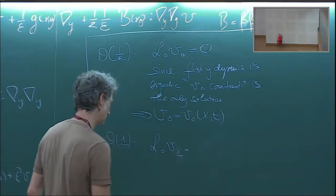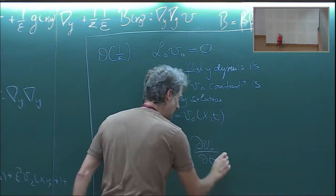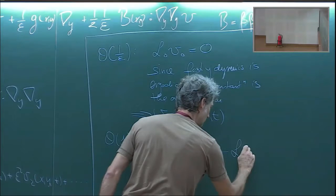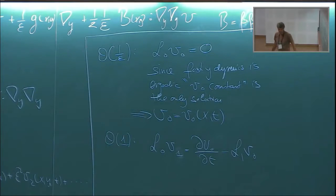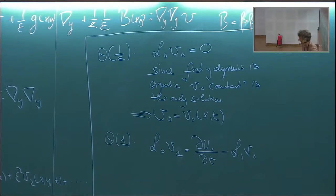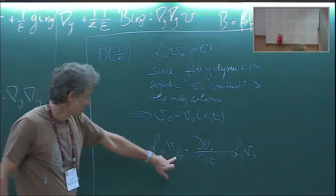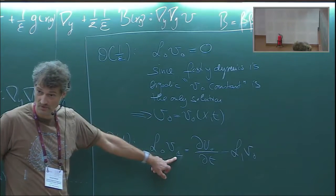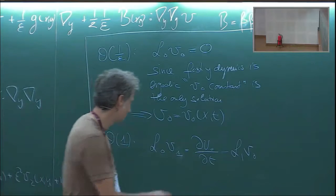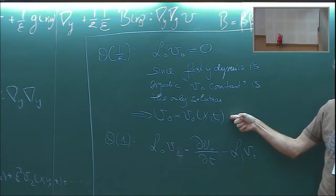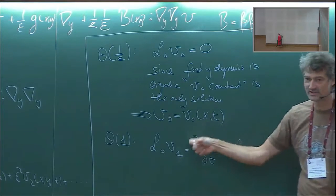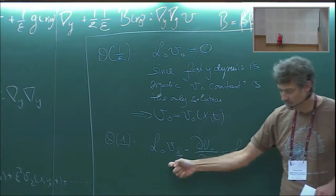For this formal expansion to make sense, we need all orders to be well-behaved — so V1 must exist. Think of this as a linear system AX = B: if A is invertible, X = A⁻¹B. But L0 isn't invertible here, so we need the Fredholm alternative. The right-hand side B is only solvable if it is orthogonal to the kernel of the adjoint A*.